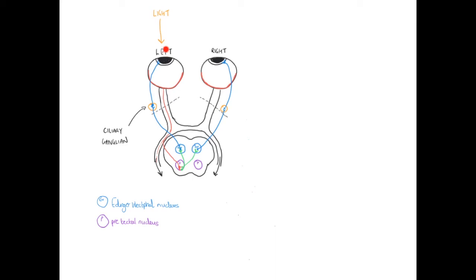In reaction to a single light stimulus to one eye, both pupils constrict simultaneously. The parasympathetic nerve fibres run with the oculomotor nerve — they hitchhike on cranial nerve 3. So the efferent arm of the light reflex — both the direct and consensual responses — are carried on the oculomotor nerve via its associated parasympathetics. That essentially covers the pupillary light reflex and why we get both a direct and a consensual reflex in response to a stimulus in just one eye.